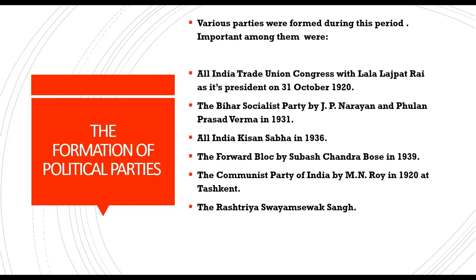The Bihar Socialist Party was formed in 1931 by Jai Prakash Narayan and Phulan Prasad Verma. The Congress Socialist Party was formed in 1934, greatly influenced by the socialist ideas of Jawaharlal Nehru. The All India Kisan Sabha was formed in 1936, working for the betterment of peasants and farmers. The Forward Bloc was formed by Subhash Chandra Bose in 1939.